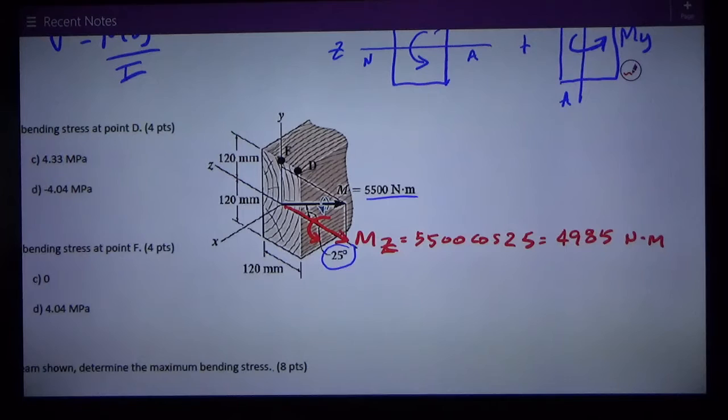For the y axis it's the y component of that single moment, 5,500. It's the opposite so My is the sine of 25 times 5,500. That works out to be 2324 newton meters. We've divided our moment into its two component parts.